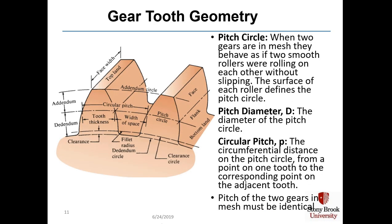Let's discuss gear tooth geometry. When two gears are in mesh, they behave as if two smooth rollers were rolling on each other without slipping. The surface of each roller defines the pitch circle, and the pitch diameter is the diameter of the pitch circle. The circular pitch P is the circumferential distance on the pitch circle from a point on one tooth to the corresponding point on the adjacent tooth. This arc length is defined as the circular pitch, and the pitch of two gears in mesh must be identical.